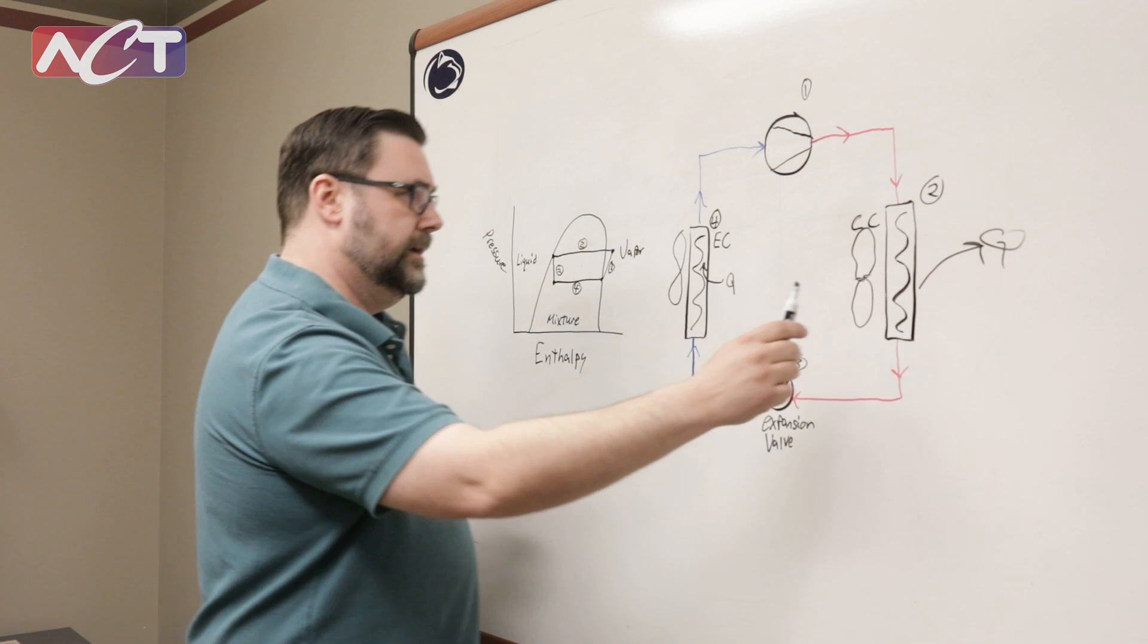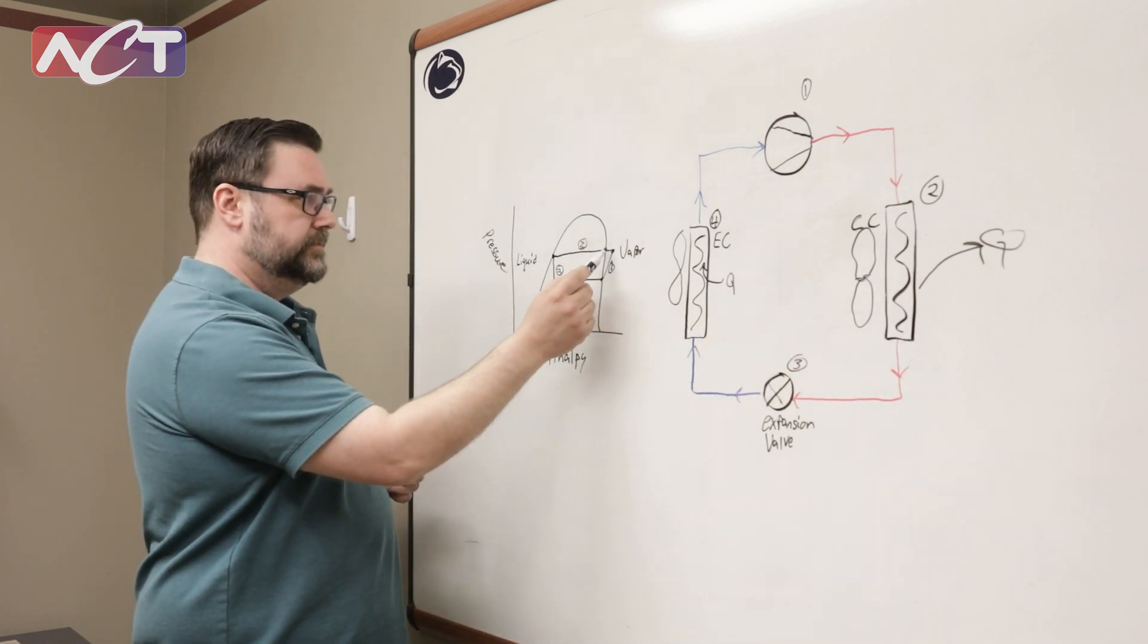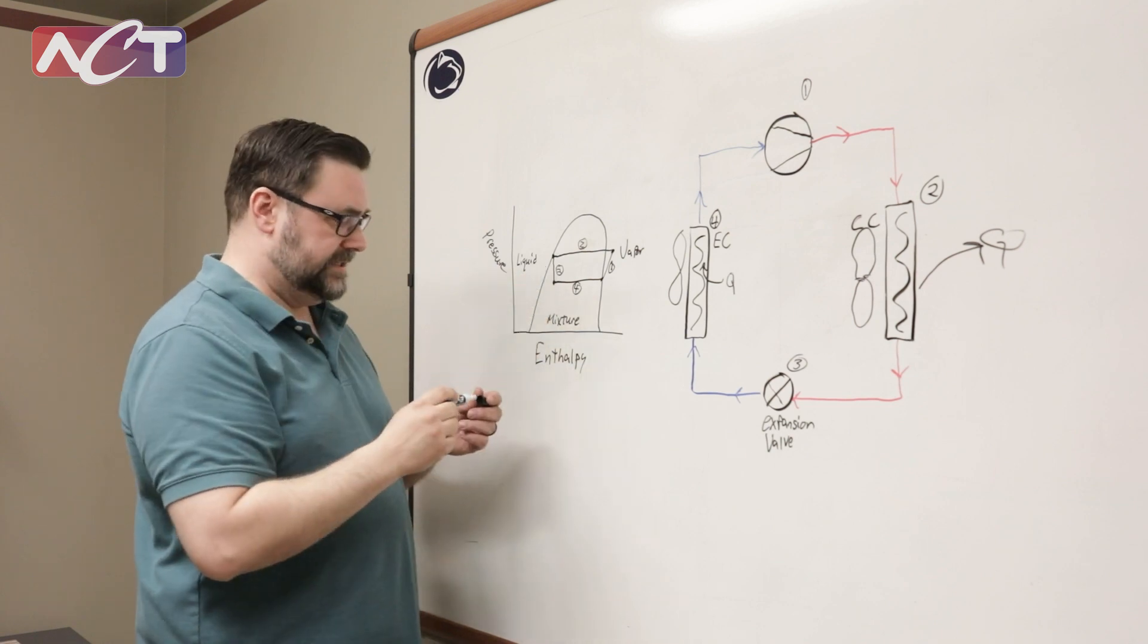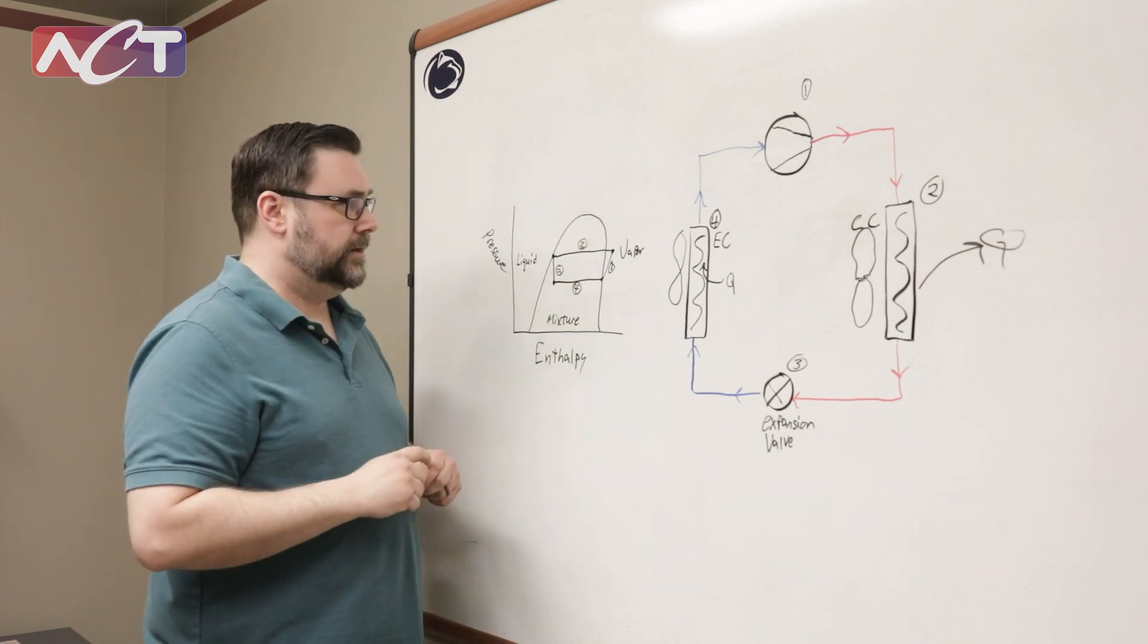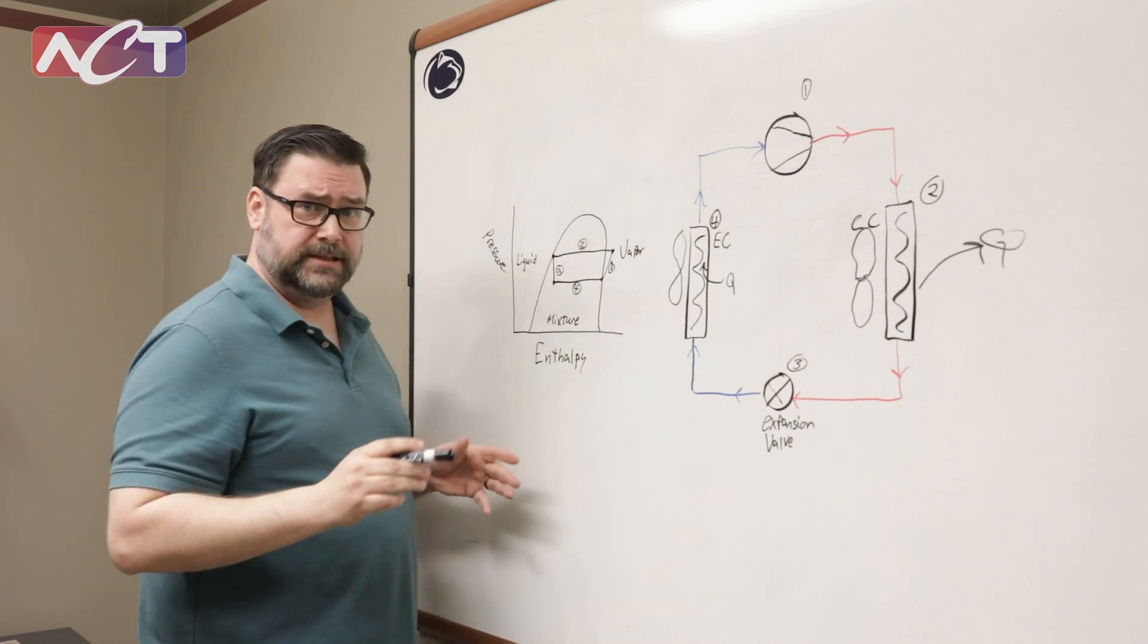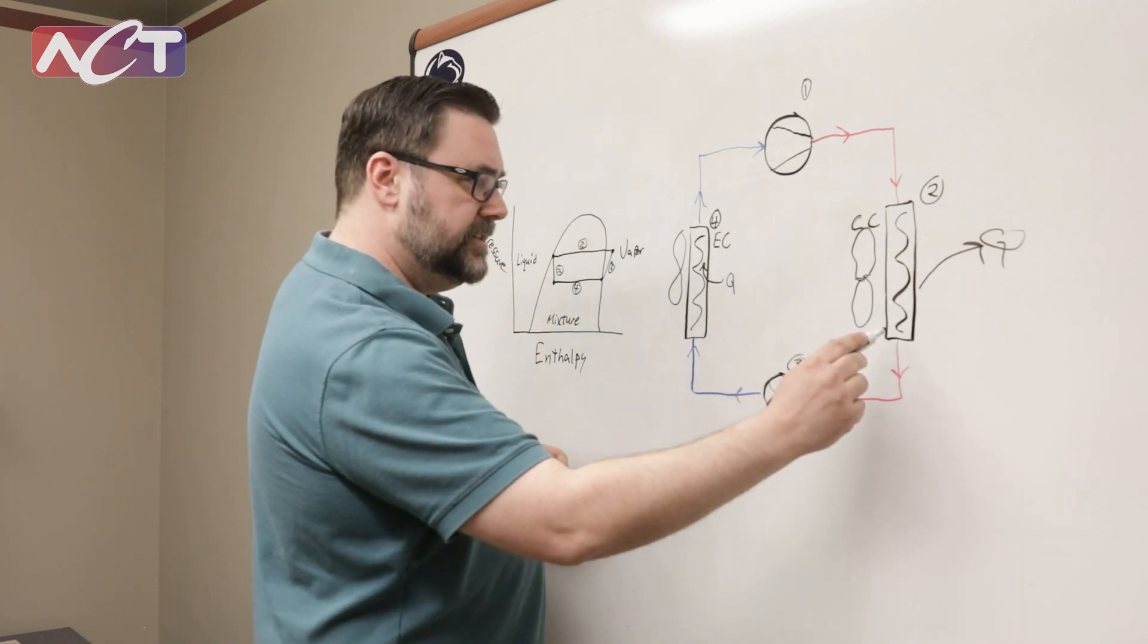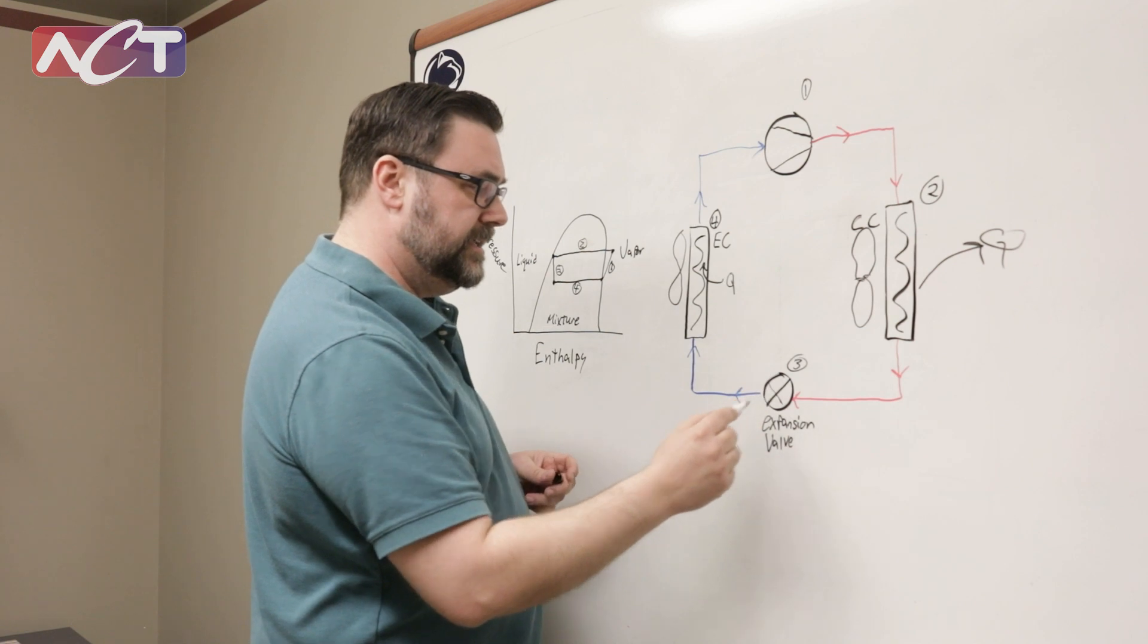So once we get it down through the coil what we're going to be doing is riding this little line here and that's going to bring it back to a saturated liquid. So we're still same temperature because we're only dealing with phase change at this point so we'll send this saturated liquid around to the expansion valve.